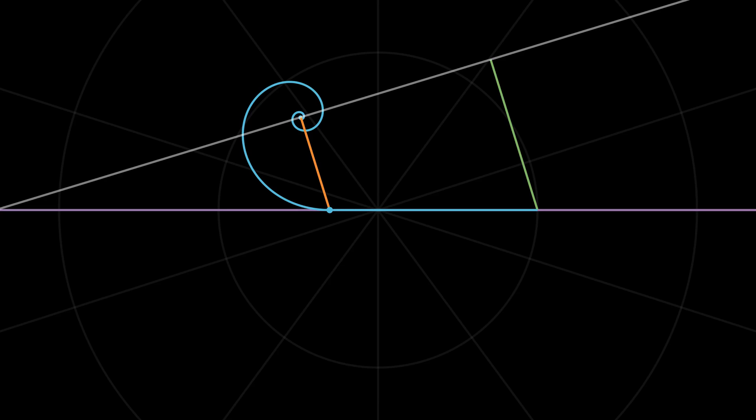Also, from the geometry of the problem, we get this right-angled triangle with one side equal to the difference between the two radial lines and another side equal to the arc length of the spiral. Because we know the angle between the radial line and the tangent, we finally see that the arc length between these two points equals the difference between the radial lengths divided by the cosine of the angle α.